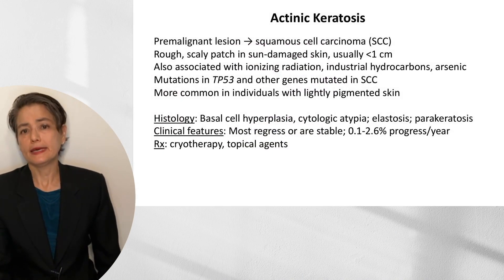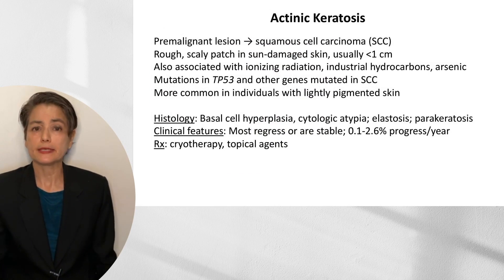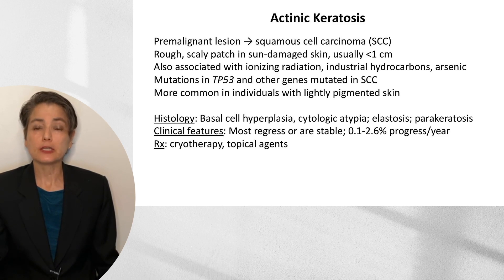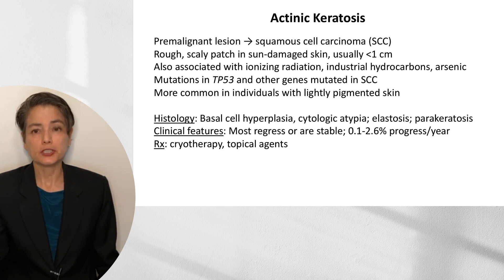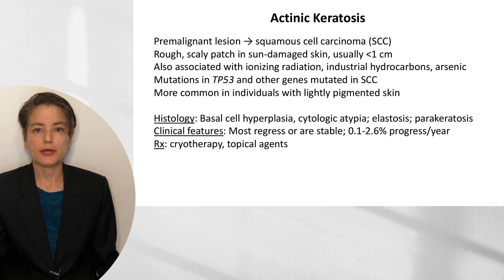Let's begin with our first lesion, which is not an actual malignancy but a pre-malignant lesion: actinic keratosis, which can lead to squamous cell carcinoma. These appear as a rough scaly patch in sun-damaged skin, usually less than about a centimeter. They can also be associated with ionizing radiation, industrial hydrocarbons, and arsenic — in that setting, they tend not to be associated with sun-exposed skin. We'll see mutations in TP53 and other genes that are mutated in squamous cell carcinoma.